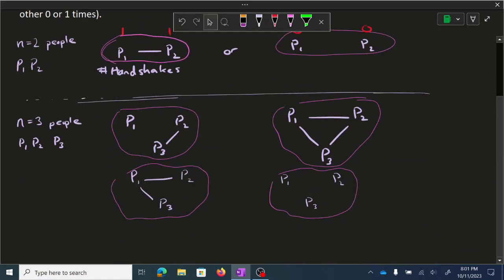So for n equals three people, I've already drawn out the four situations that could arise. Again, so for example, in this bubble, we could have drawn at P1 going to P3 or P1 going to P2. But really, this is the case where just two people shake hands and the other one doesn't. So in this case, we have zero, one, one. And the statement is still true because we have one person or two people both have a one.